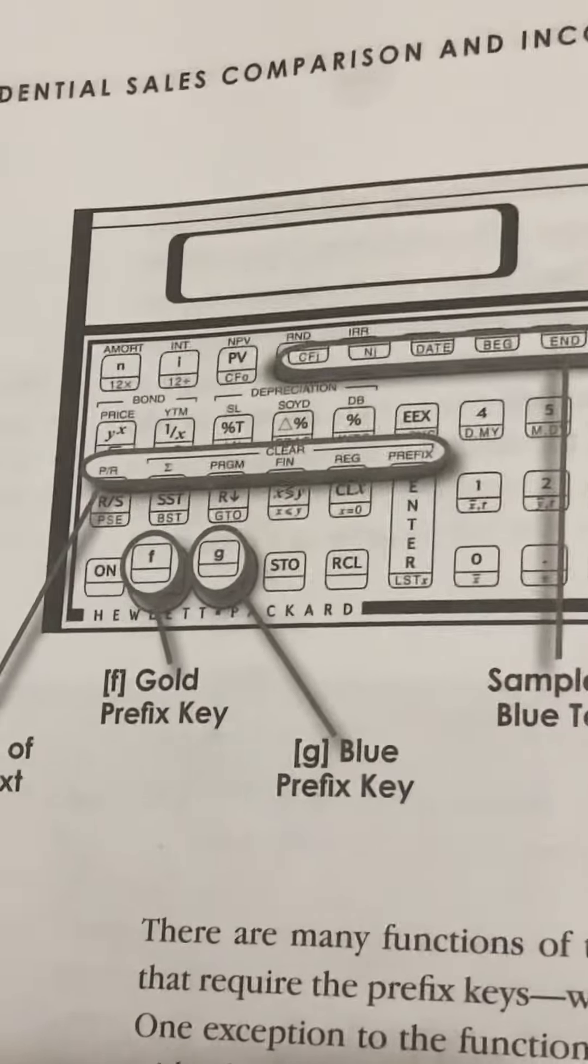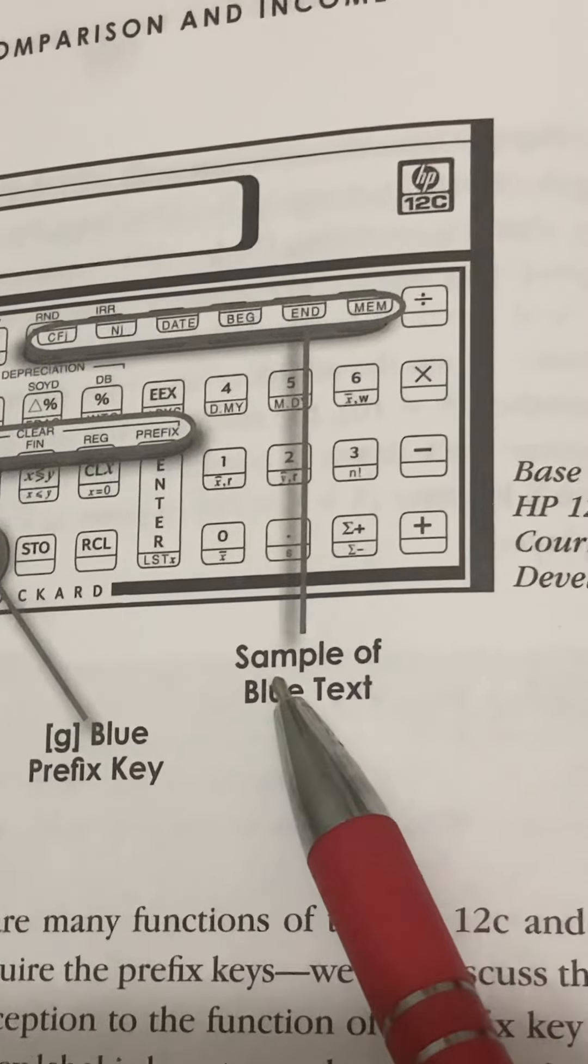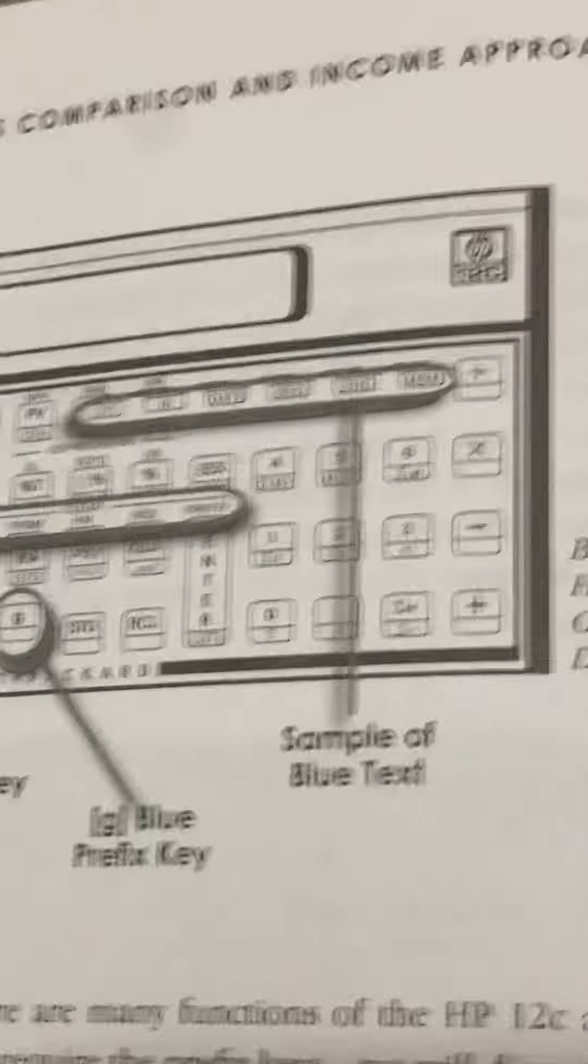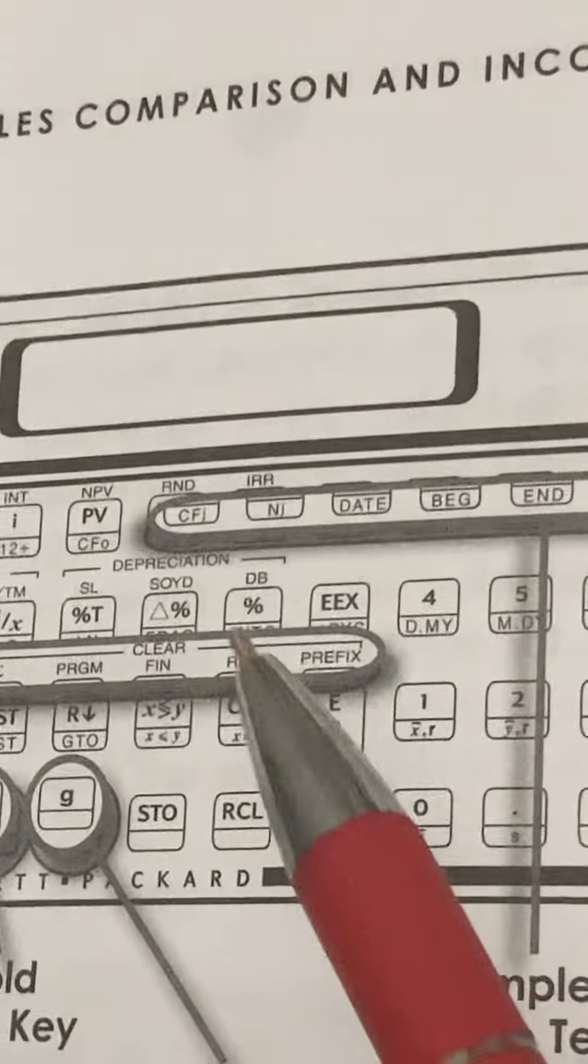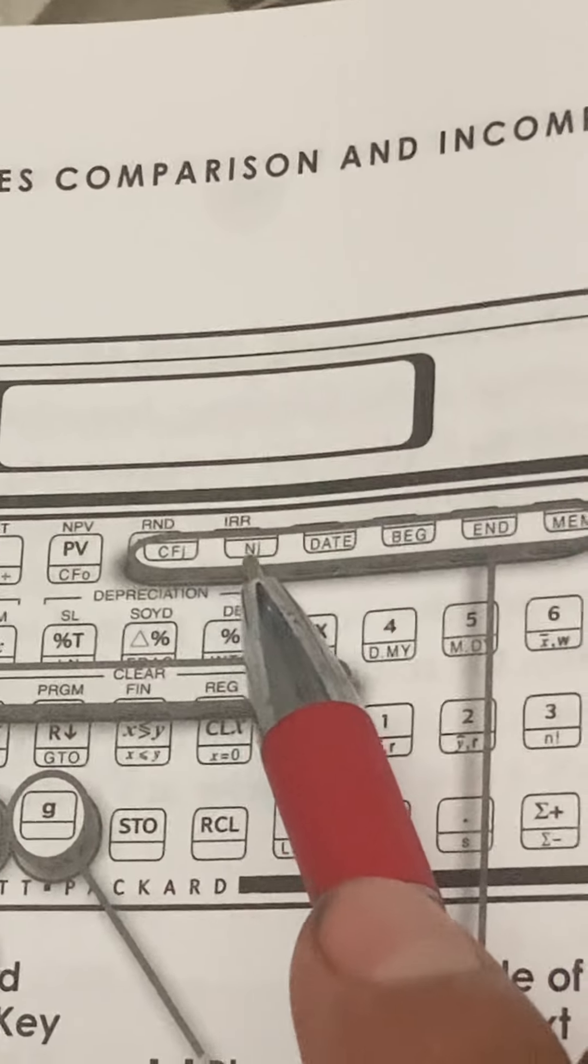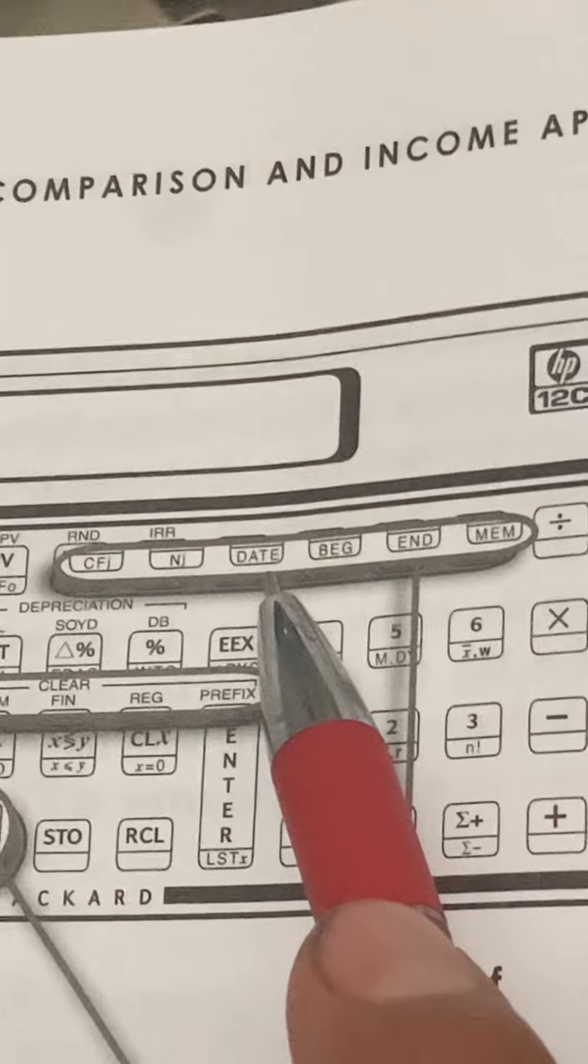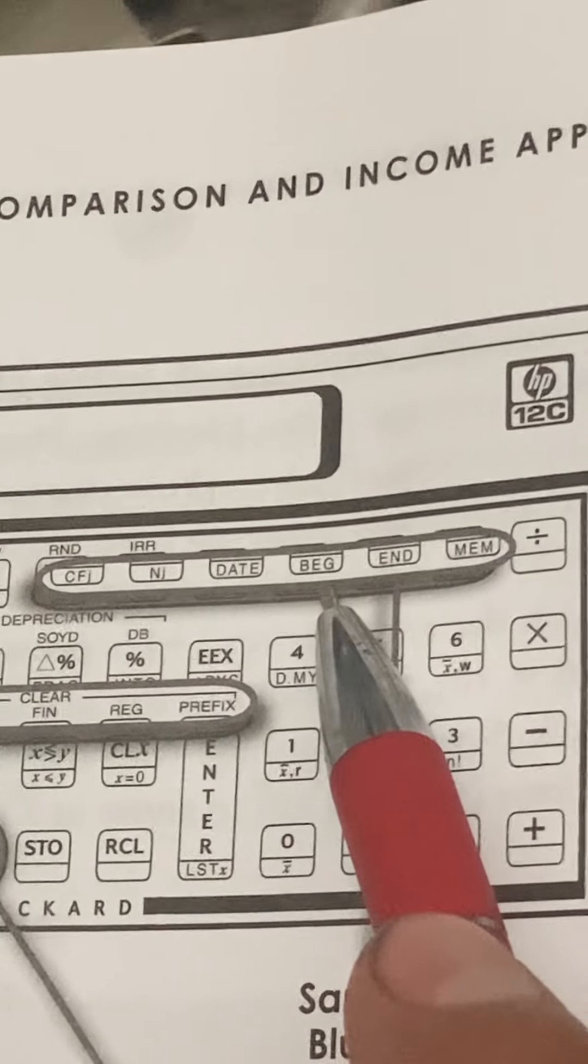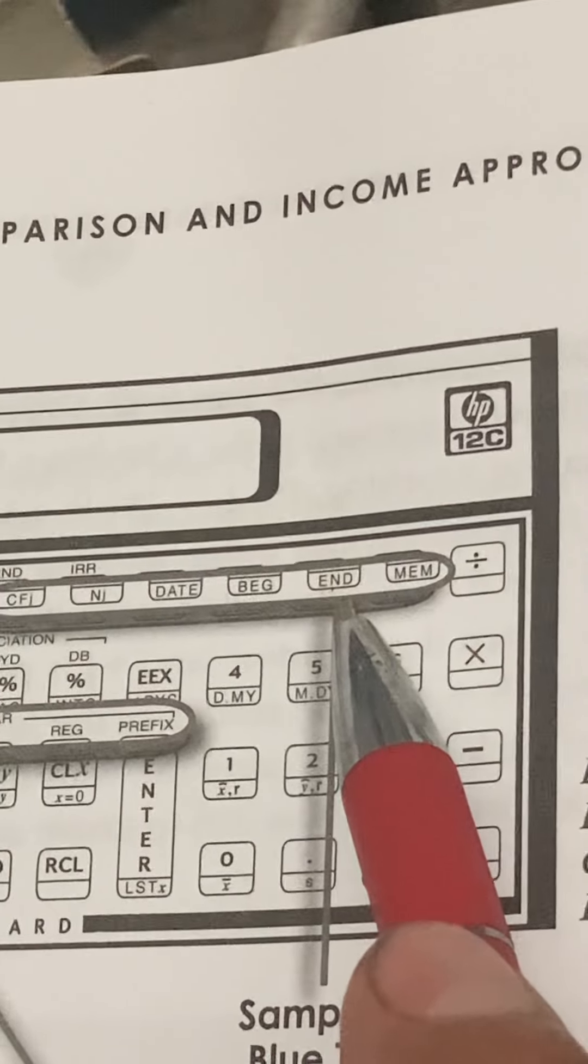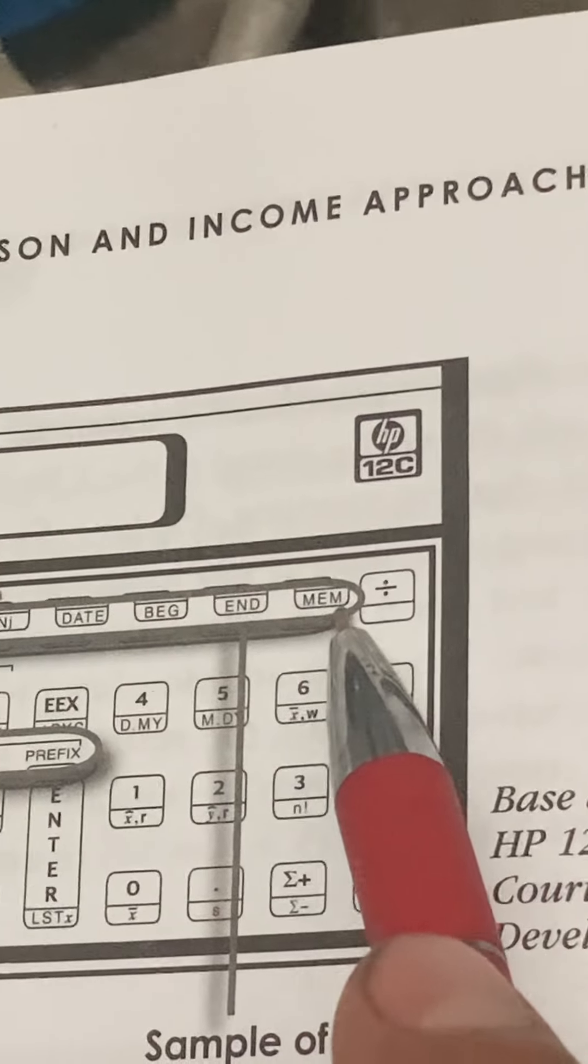And it shows a diagram of the HP-12C calculator. Here is the sample of blue text. We're going to zoom in. You can see CFI. And then on the next one it says, I think it's NI. The next one says date. The next one says BEG. The next one says END for end, beginning, end. And then the last one is MEM.